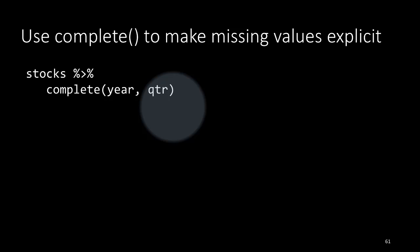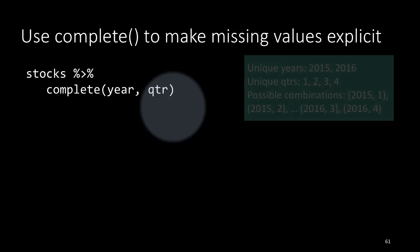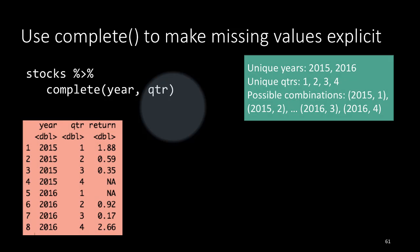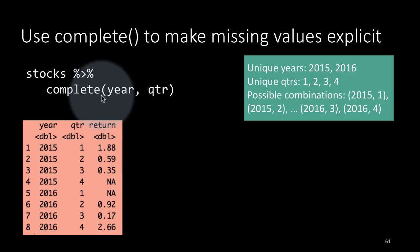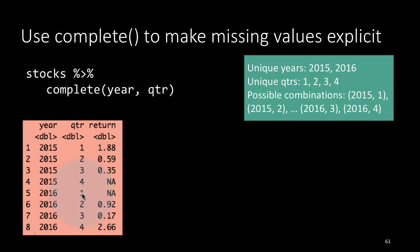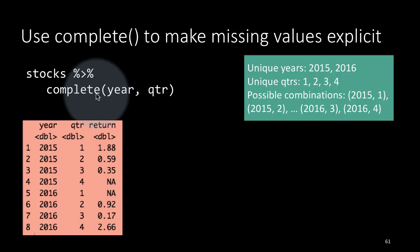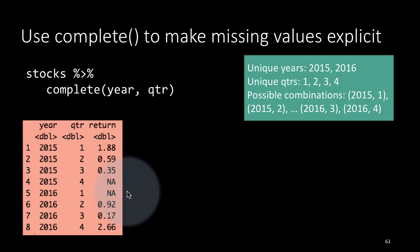Combination of 2016 quarter 1 is not there. When we say complete, we are telling the system to include a row for that, and of course that row doesn't have any return, it will come out as NA. Now you see the first quarter of 2016 is explicitly occurring as an NA. This combination 2016-1 did not exist earlier, but this complete function has added this particular value, and since the return is not there for that, it's going to come out as NA.